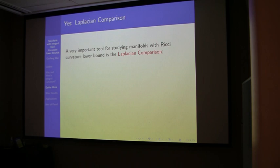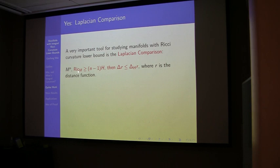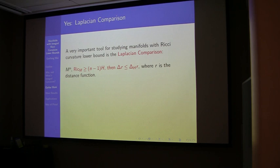One key tool for Ricci curvature bounds is the Laplace comparison. The usual Laplace comparison says: if you have a Ricci curvature lower bound, then the Laplacian of the distance function is always less than or equal to the Laplacian of the distance from the model space. When h equals zero, the model space Laplacian is explicitly (m minus 1) over r, where r is the distance from a fixed point.